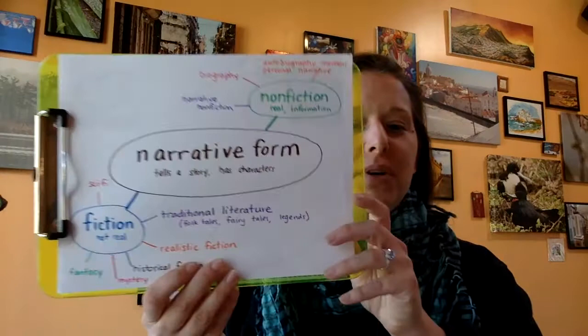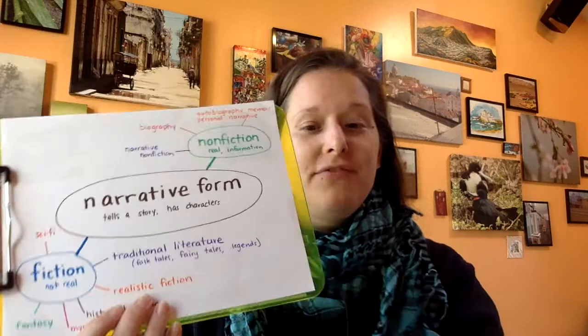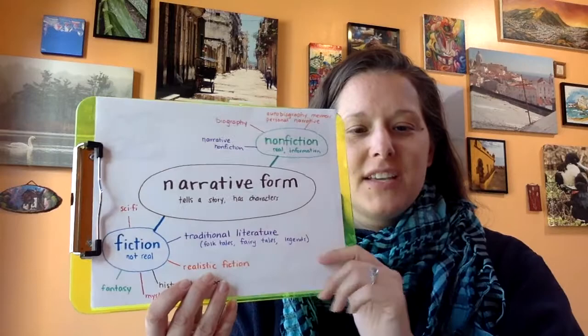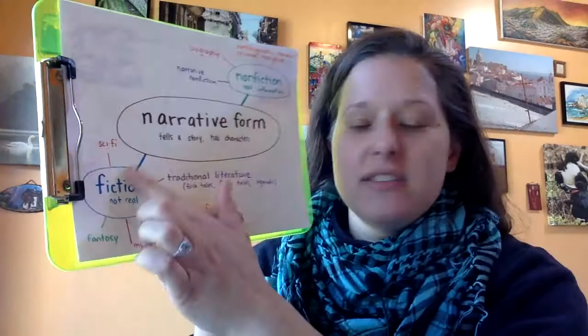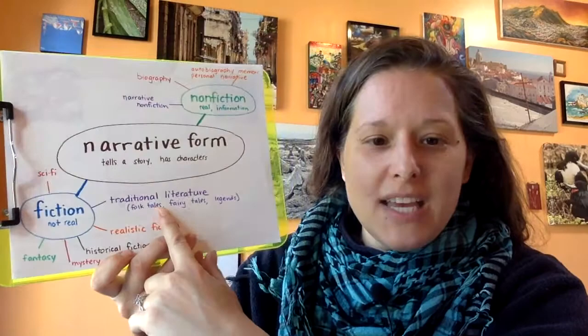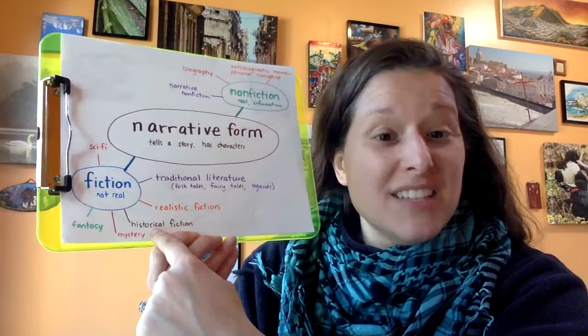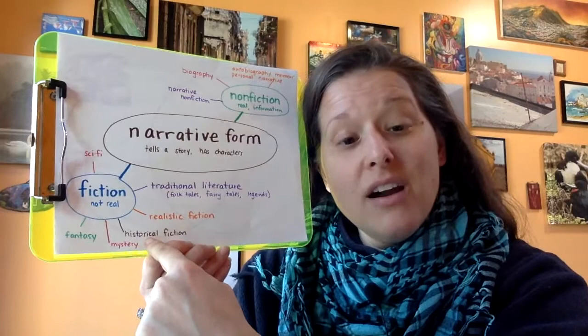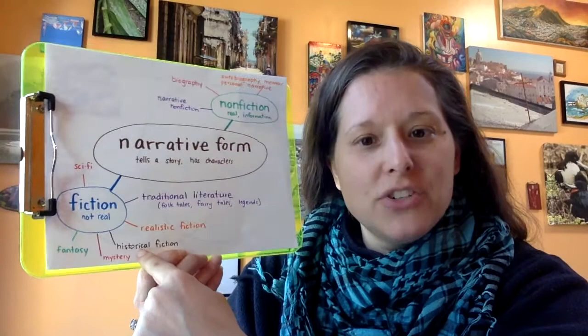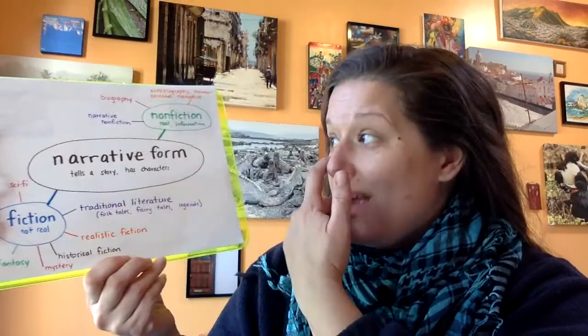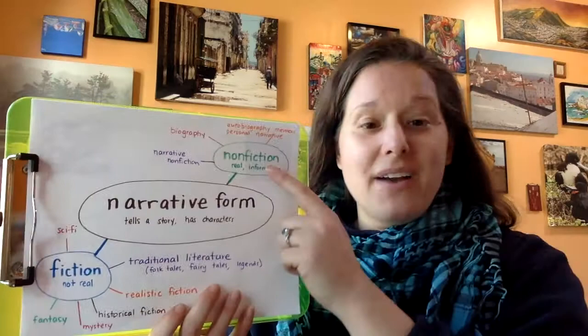Now we have books, videos, movies, and poems — all these different ways of telling stories. When it comes to books, the narrative form means it tells a story with characters. The narrative form we most often see in fiction genres: things like sci-fi, traditional literature like folk tales and fairy tales and legends, realistic fiction — stories that seem real but aren't — and historical fiction, where someone takes a real time in the past and writes a story as if they were there.